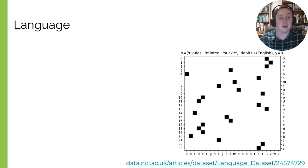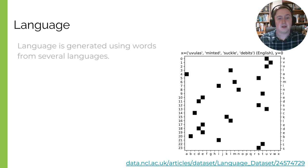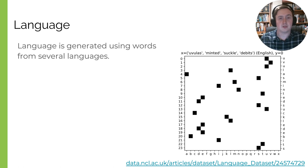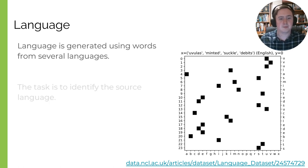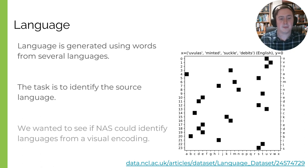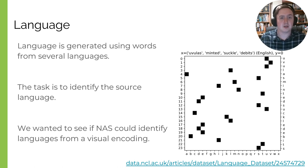Our second dataset is the Language dataset. This is created by encoding four words from a given language's dictionary — all six letters long — into a visual space. The task is to identify the source language. We want to see whether or not this type of visual encoding gives enough information for machine learning to identify the language.